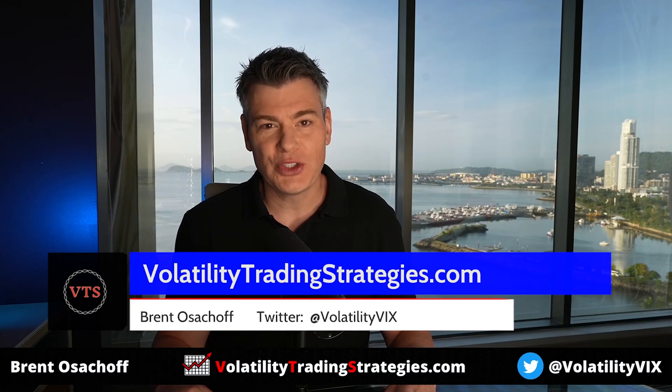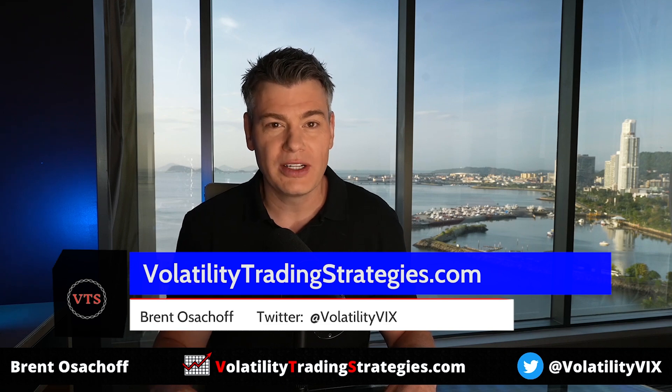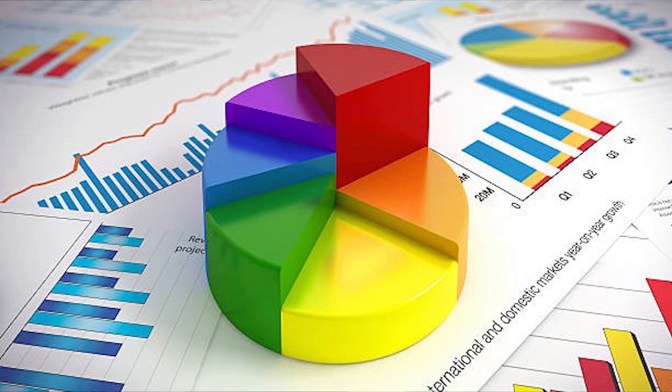Welcome back everybody to Volatility Trading Strategies. This is a very important volatility lingo video on a subject that is very often overlooked by investors, and that is correlation. Many investors understand the importance of having a diversified portfolio with several different asset classes or strategies. It spreads out the risk and is meant to protect the portfolio during down periods, which of course we all have. It doesn't matter how good your portfolio is — you're going to have periods where things just aren't working out as planned, and that's where being diversified will help.